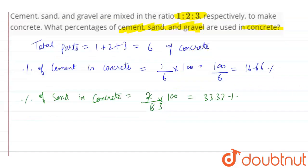Now, percentage of gravel in cement is equal to gravel in the ratio of 3, and the total parts is 6. 3 upon 6 into 100, that is 50 percent.